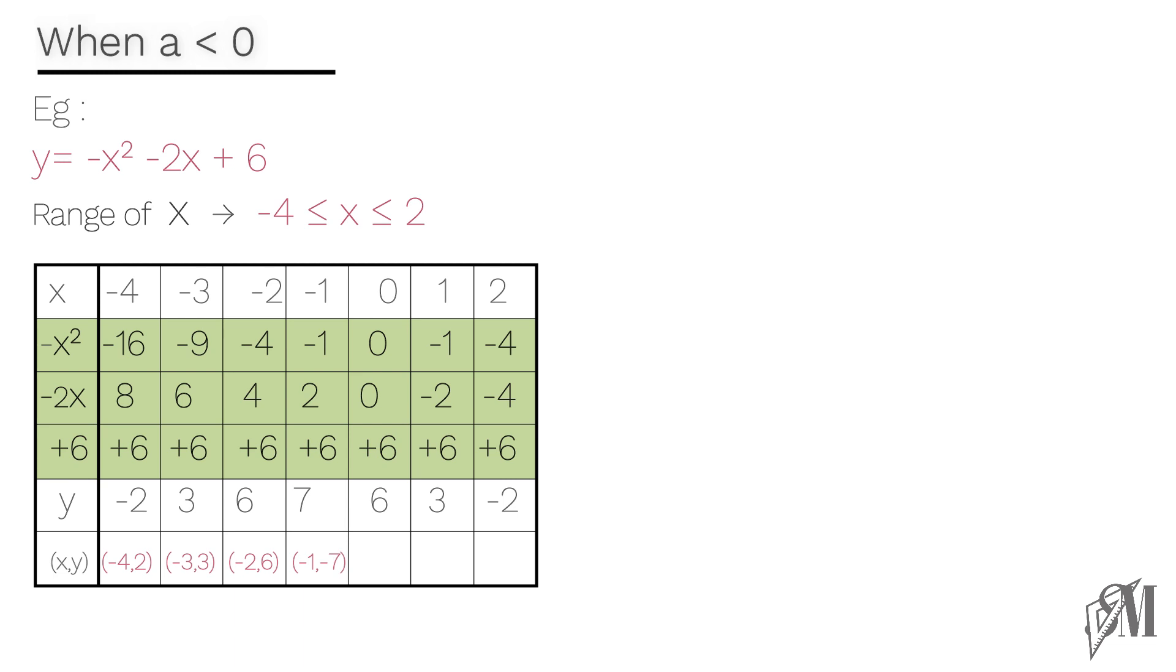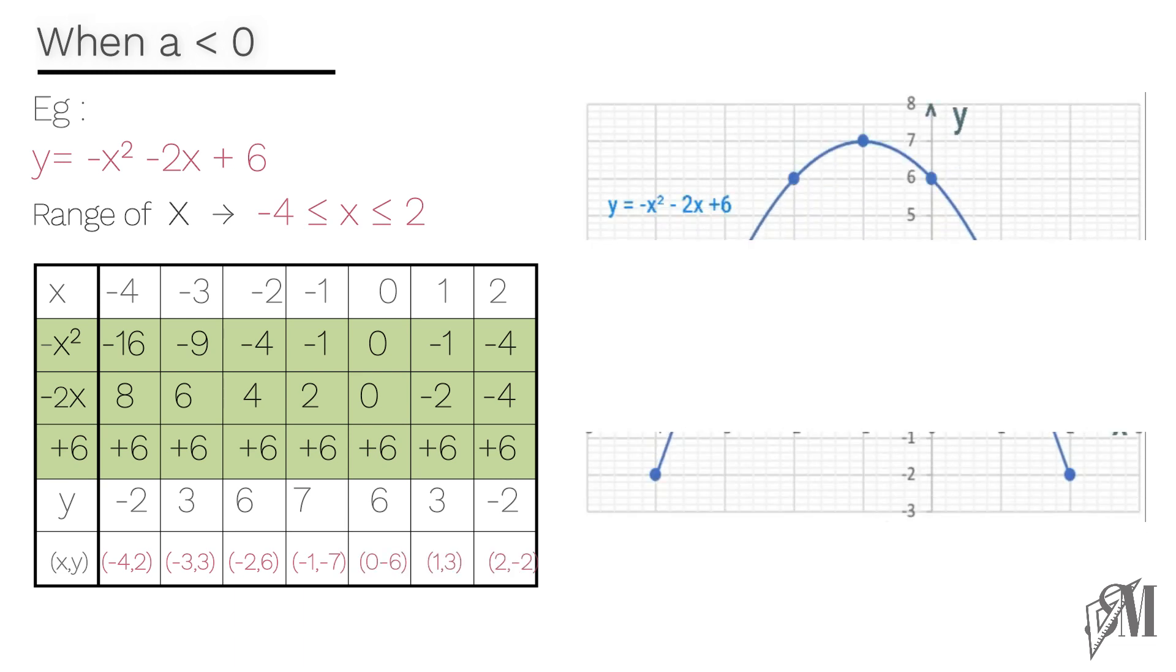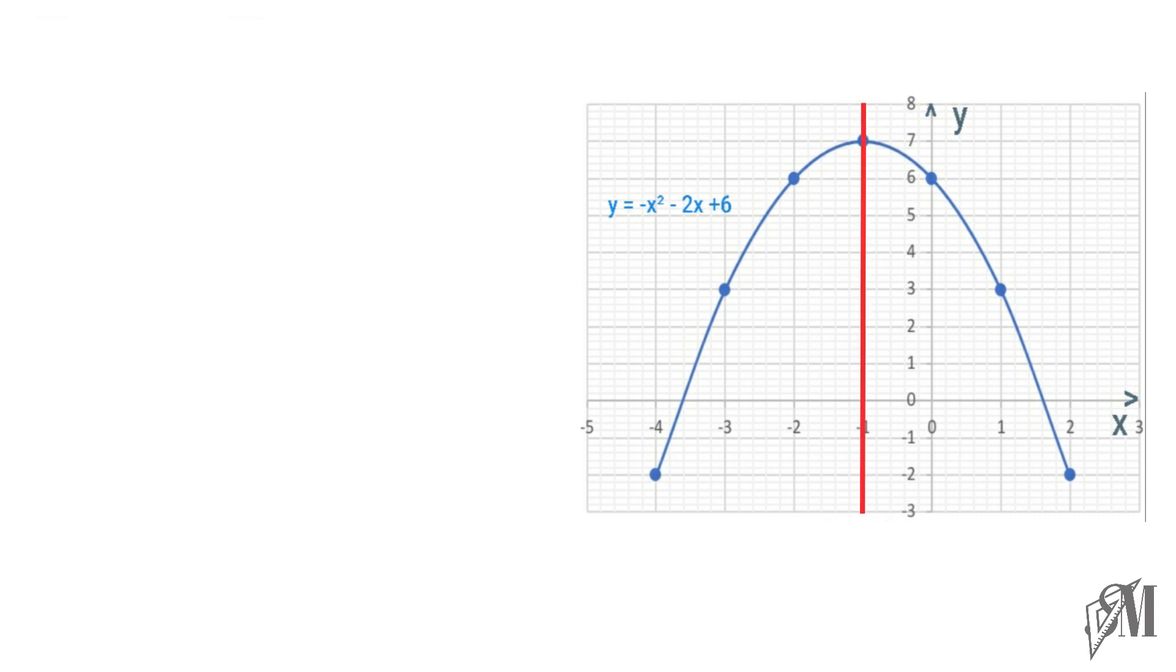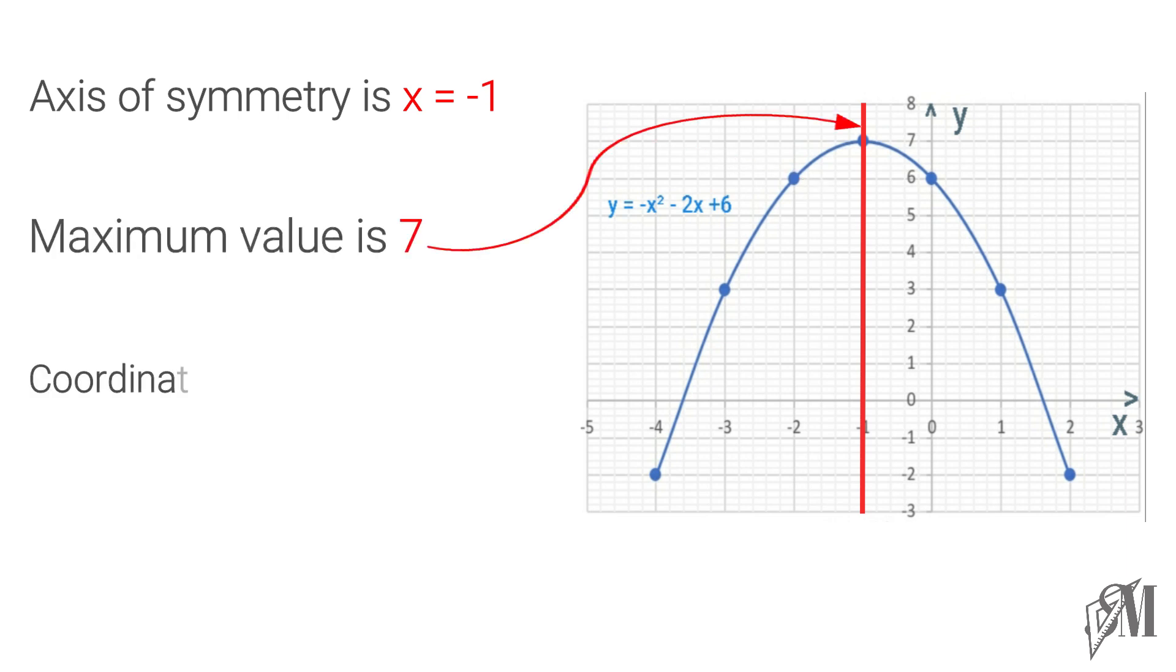Fine, now let's plot the graph. When drawing the axis, note that the y-axis must shift towards left as x have more negative integers, and the x-axis must shift towards bottom as y has more positive coordinates. Here you can see the graph is symmetric along x equals minus 1, thus x equals minus 1 is the axis of symmetry. This function has a maximum value of 7, and the coordinates of the turning point become minus 1 and 7.